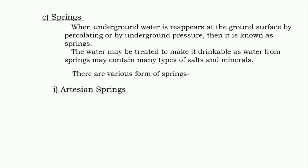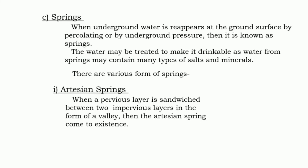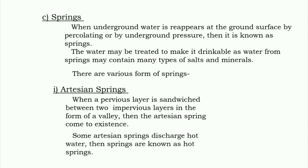First is artesian springs. When a pervious layer is sandwiched between two impervious layers in the form of a valley, artesian springs come into existence. Some artesian springs discharge hot water, and these types of springs are known as hot springs.